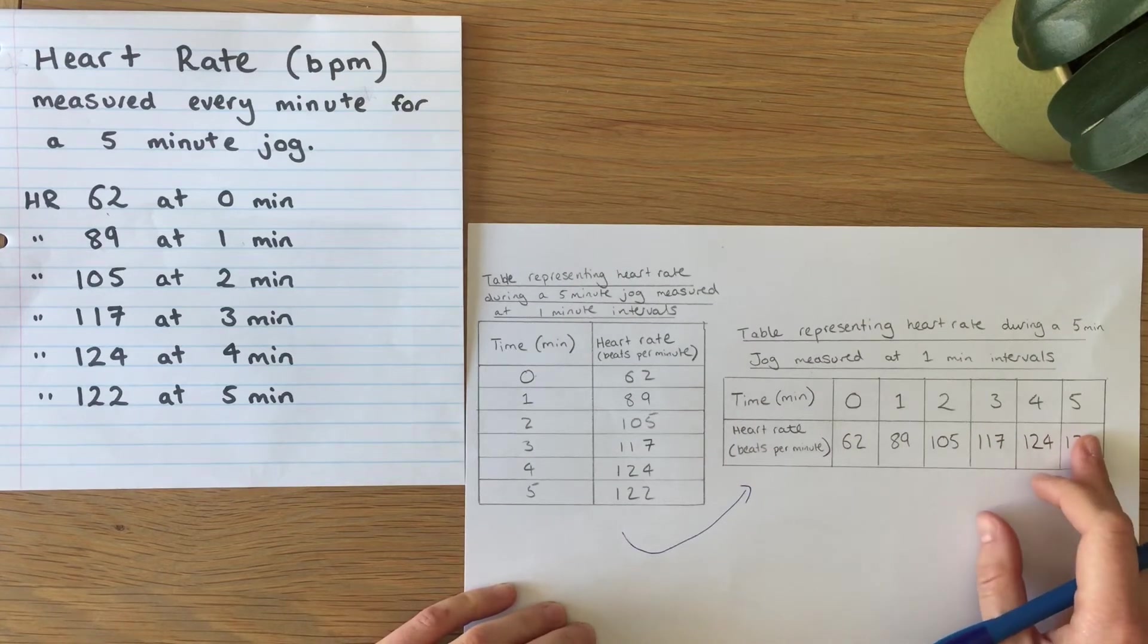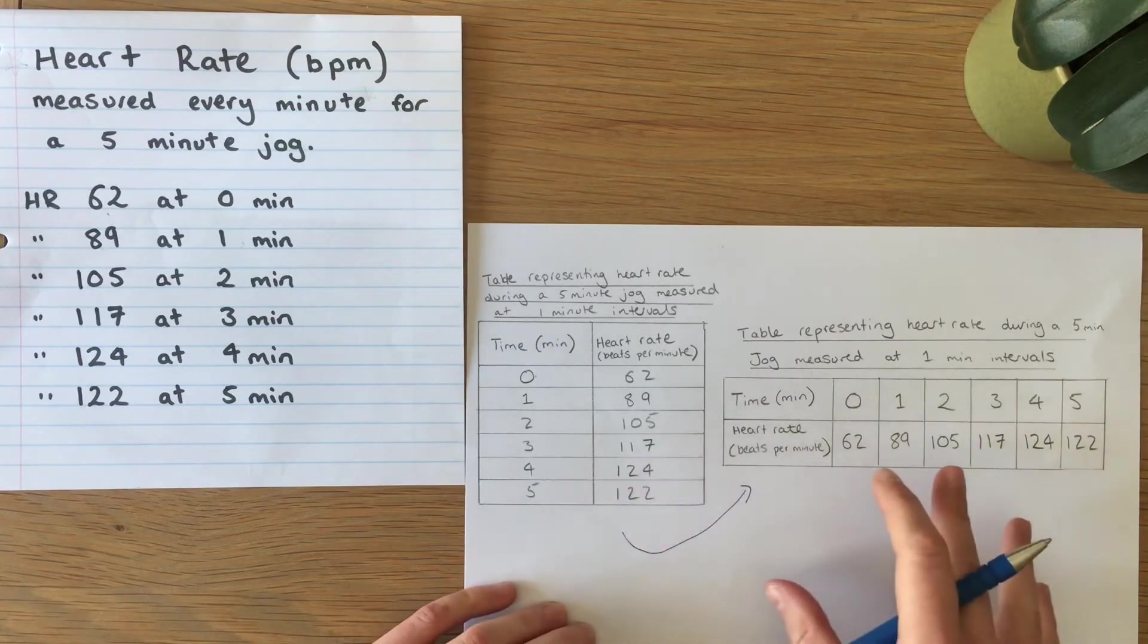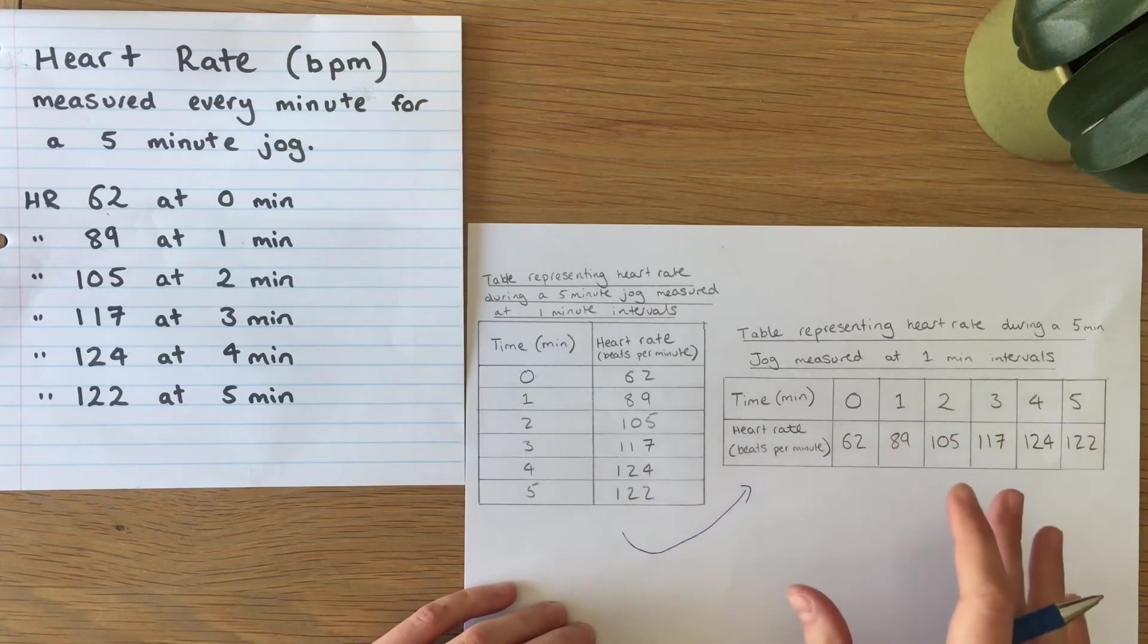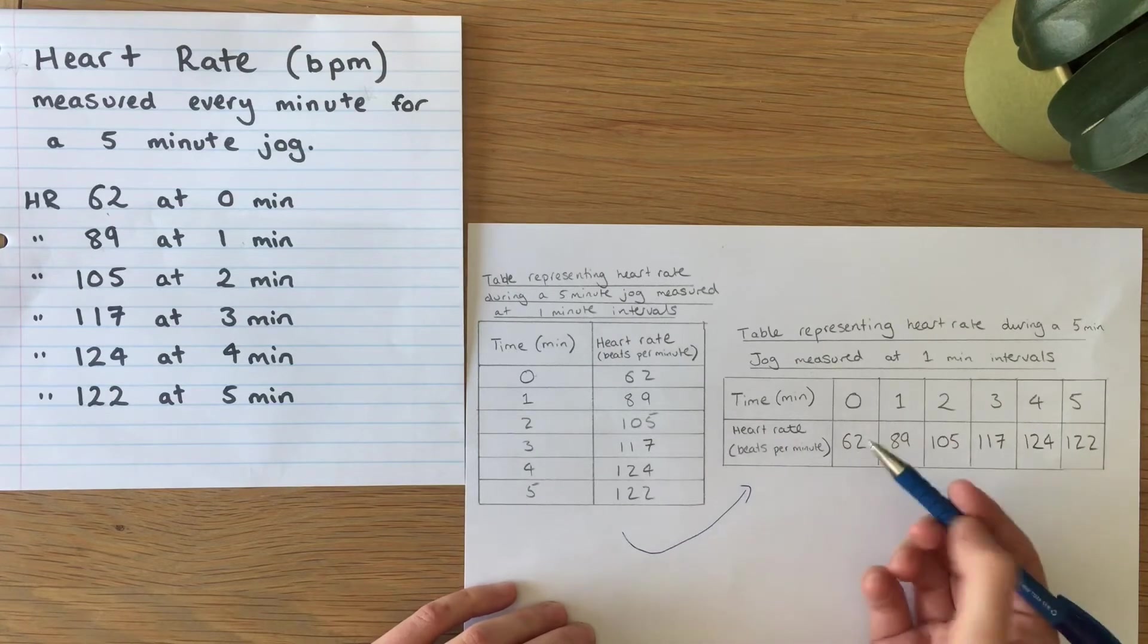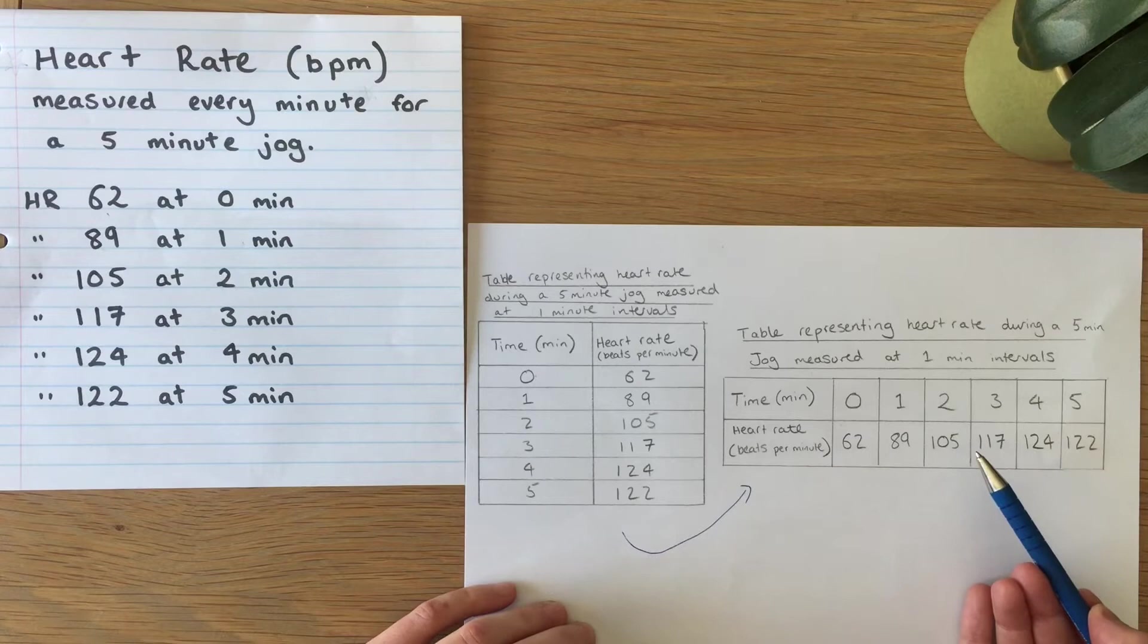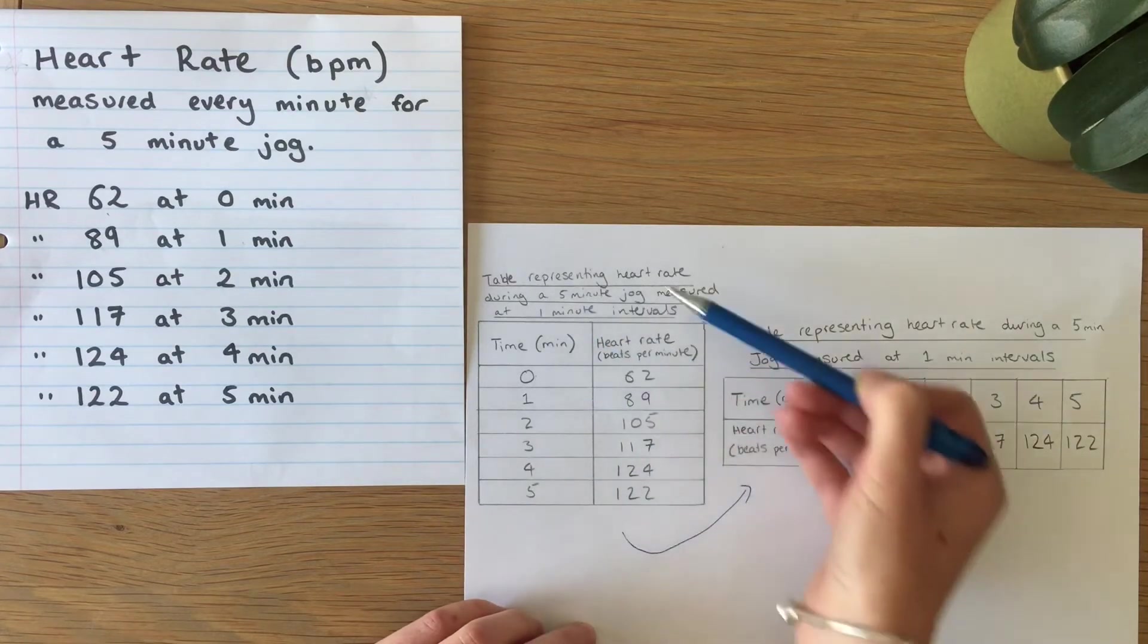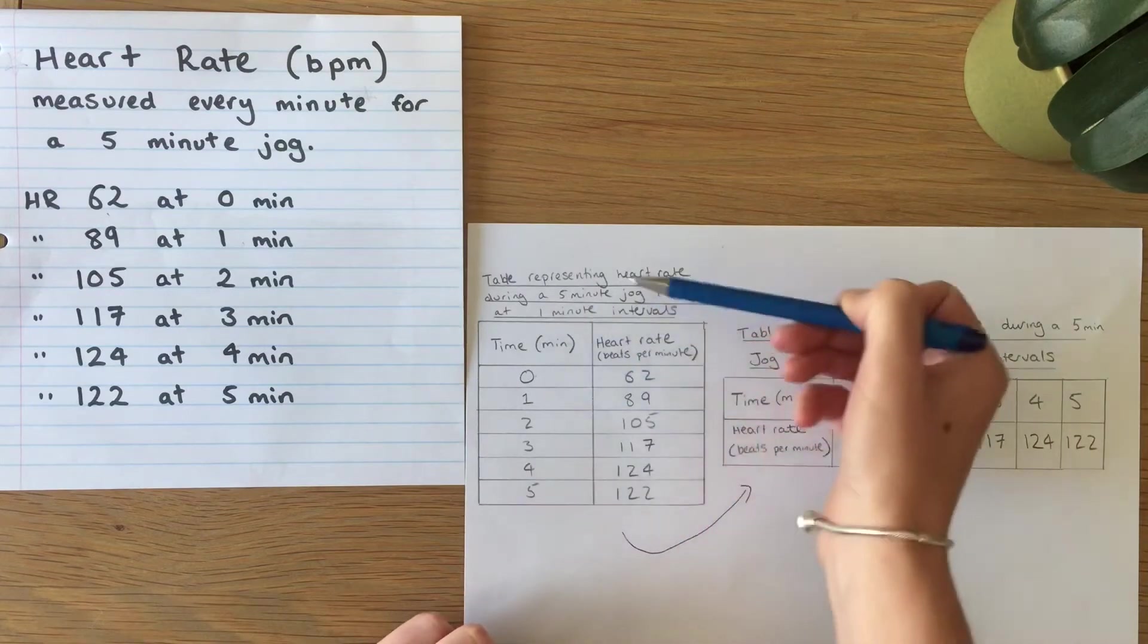So that's something that's quite easy to get your head around. It's representing exactly the same data but just in a different orientation. So you might well see this in an exam, don't be afraid, but when you are drawing your own tables we want to see the column set up.